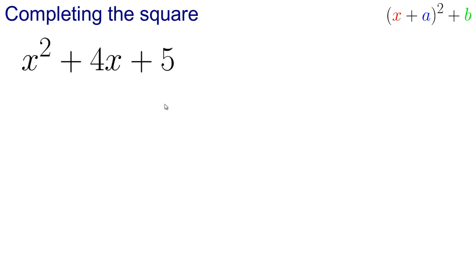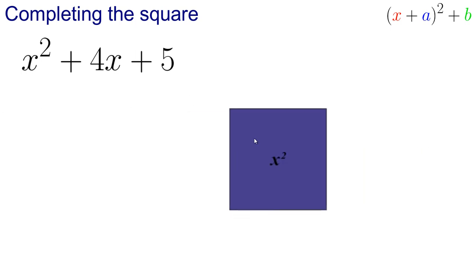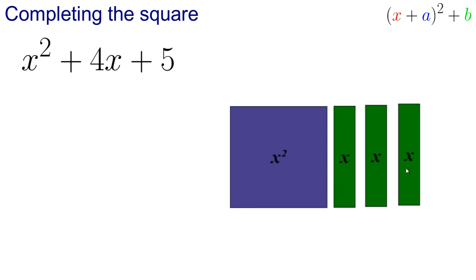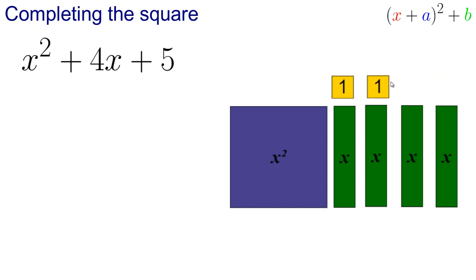So let's look at what that looks like. If we've got an x squared, we've got 1, 2, 3, 4, 5 1's. So we've got x squared, plus 4x, plus 5 is here.